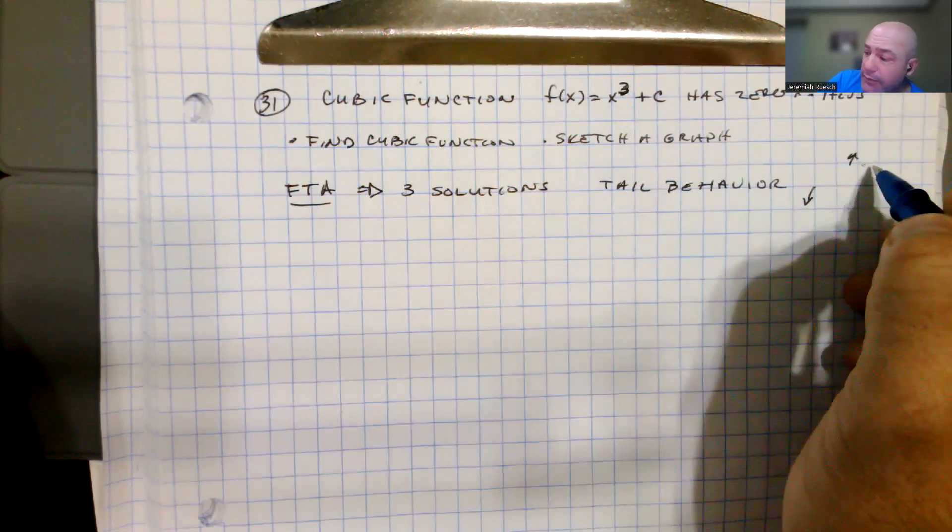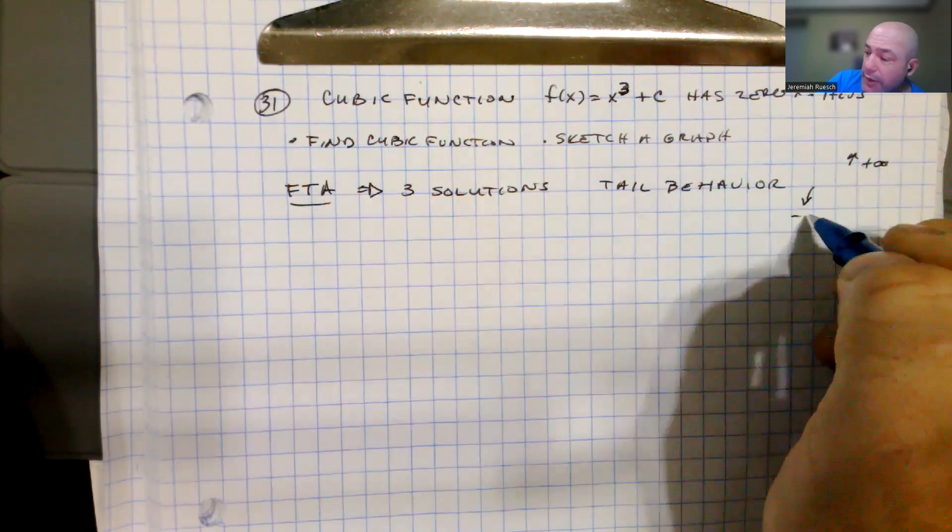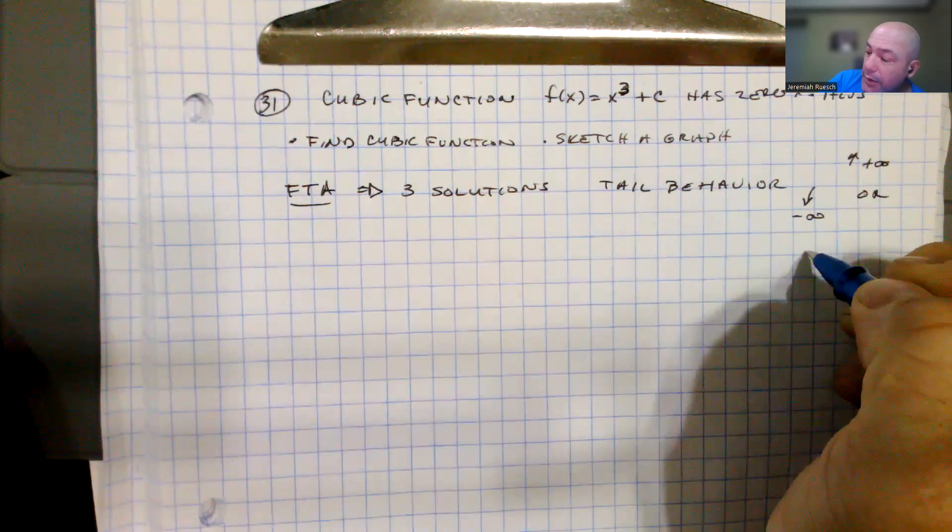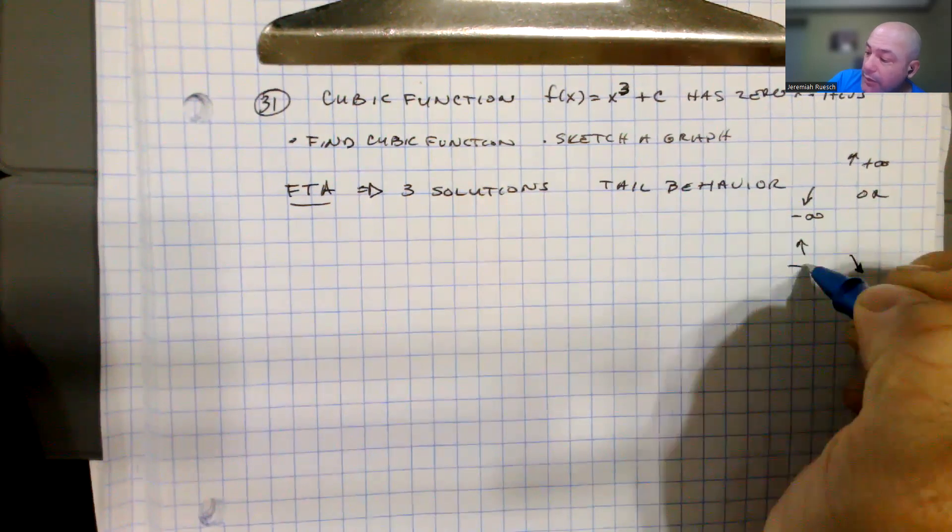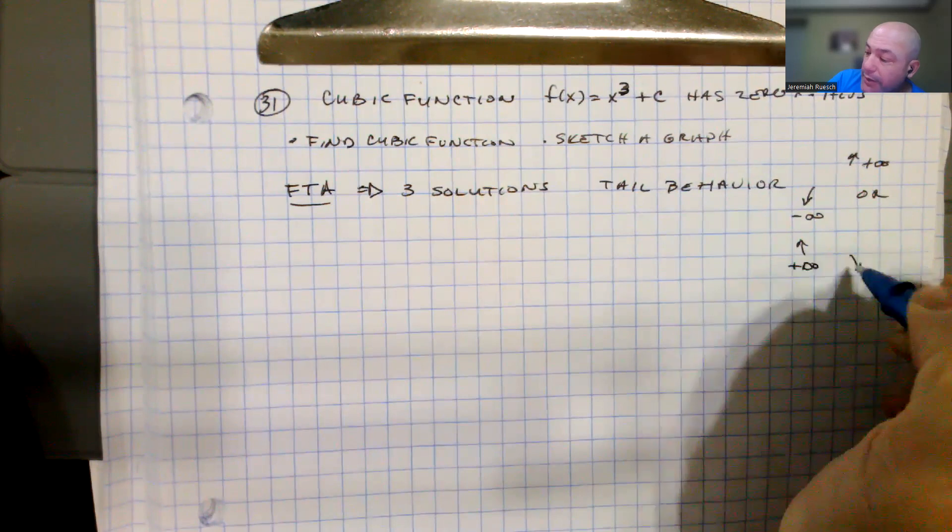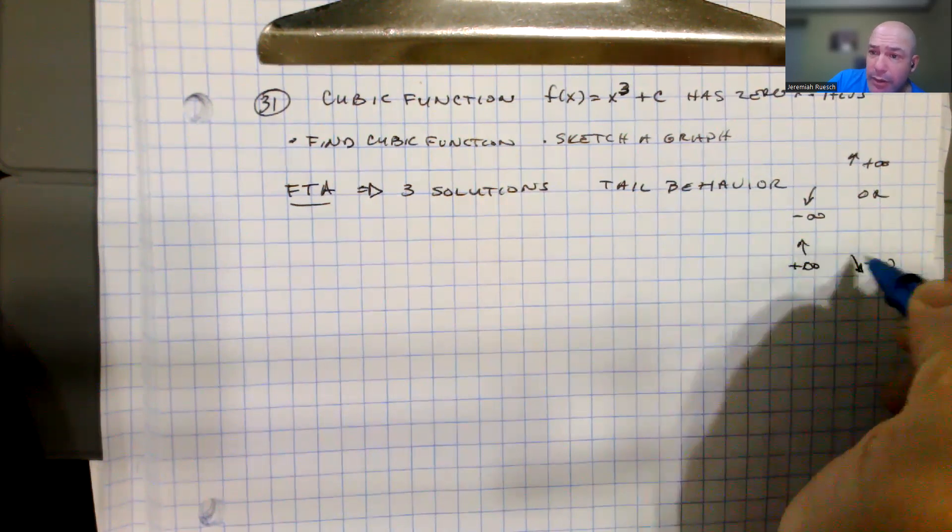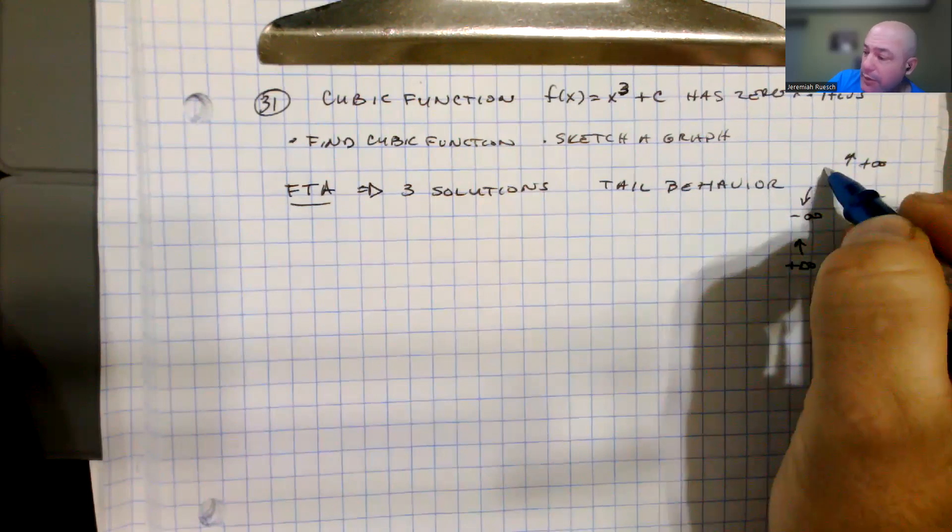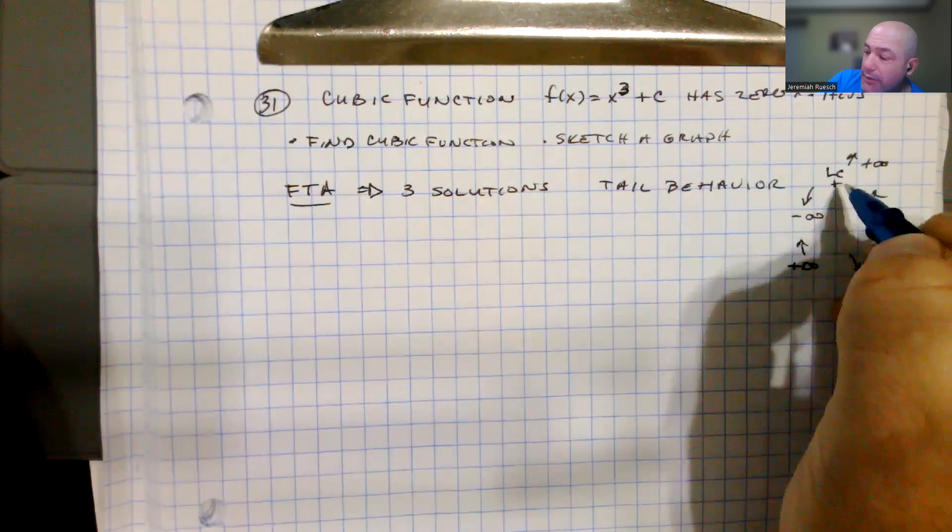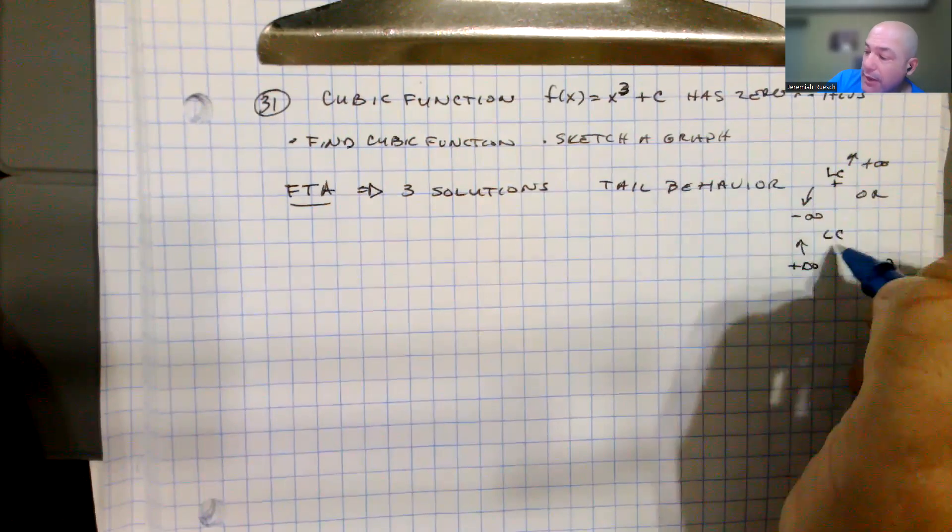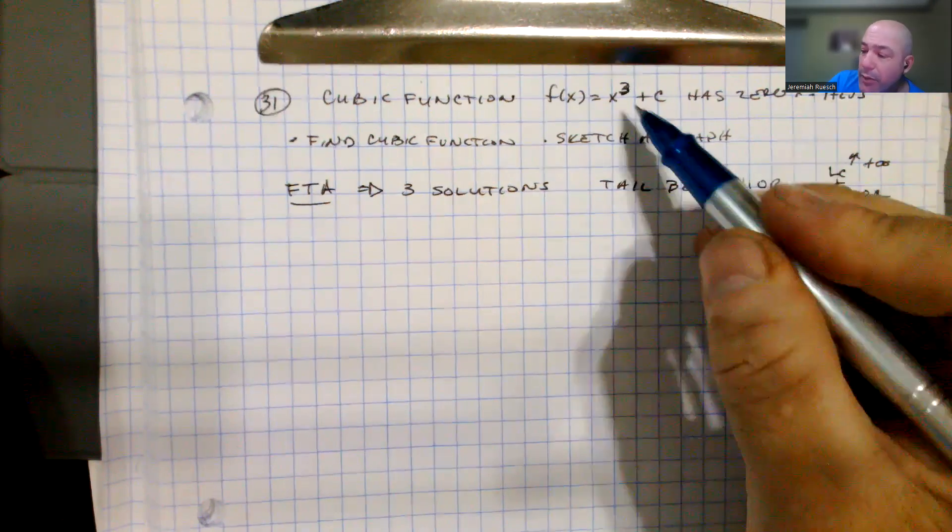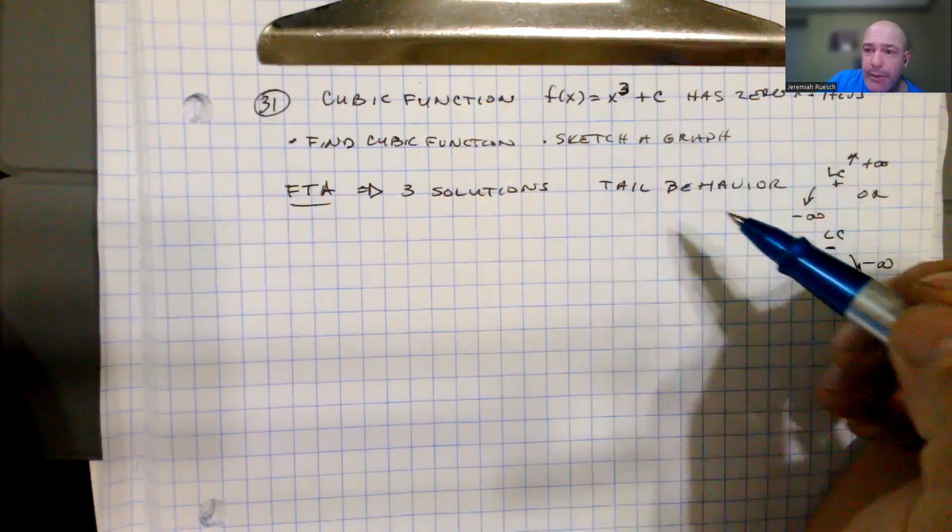or the tails do this, where one is going to positive infinity on the left and one's going to negative infinity on the left. If the leading coefficient is positive, it's doing this. If the leading coefficient is negative, it's doing something like this. And that's true for any odd degree.